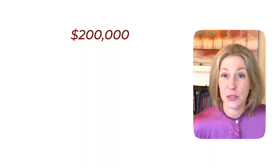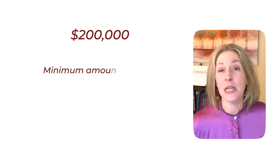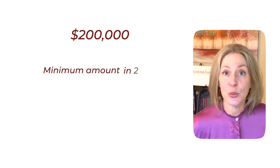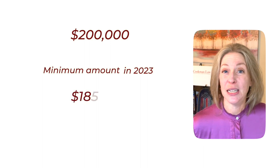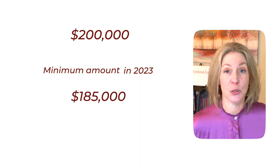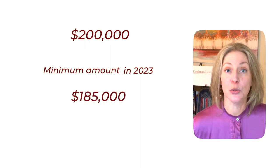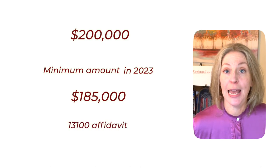If that account is, say, $200,000 — more than the minimum amount, which in 2023 is about $185,000, that you can just get released through a $13,100 affidavit — and the asset is not titled in the trust but it is on the Schedule A, what happens then?